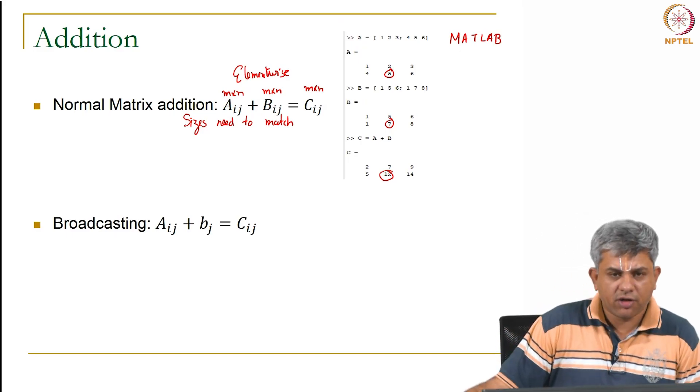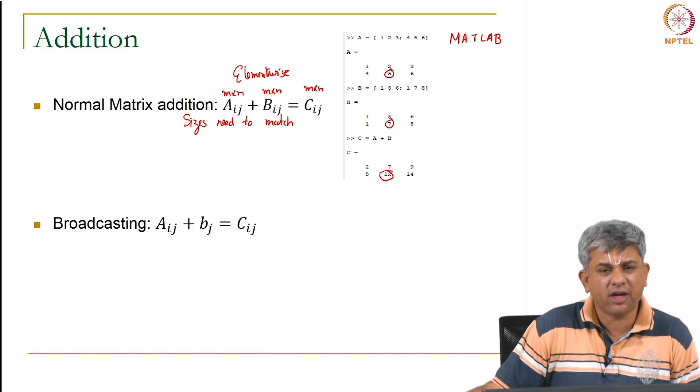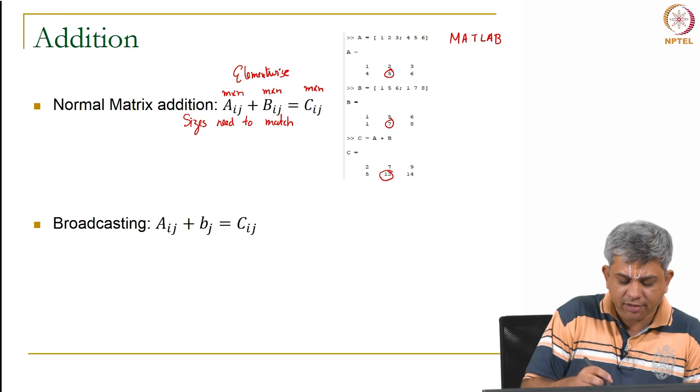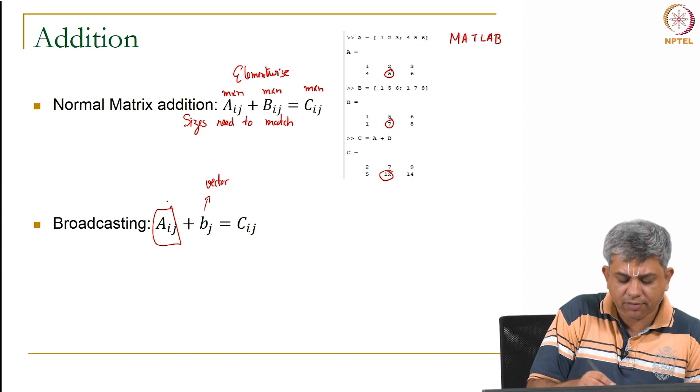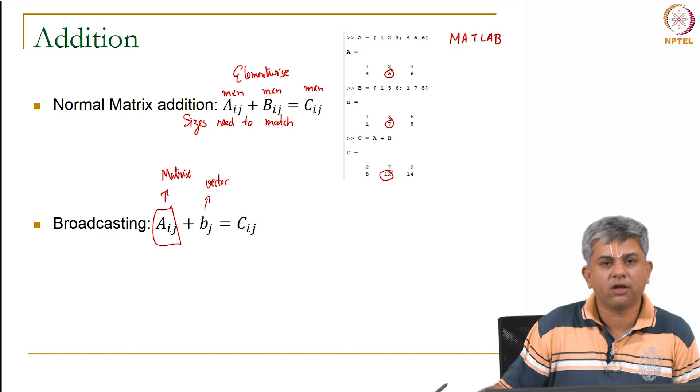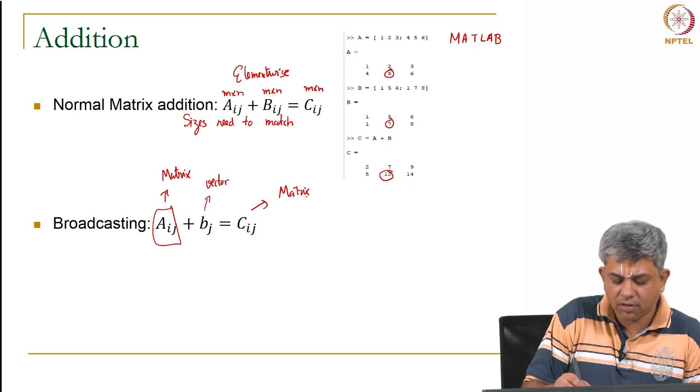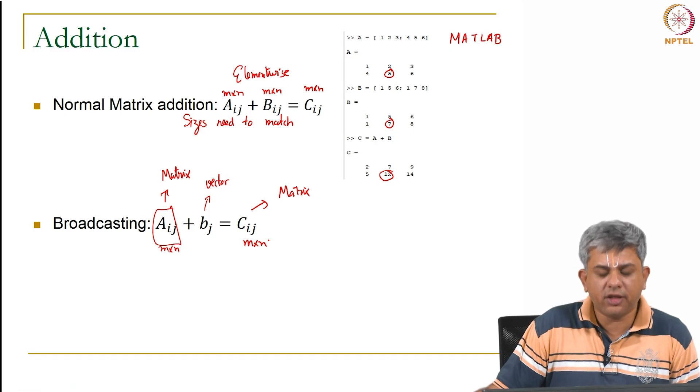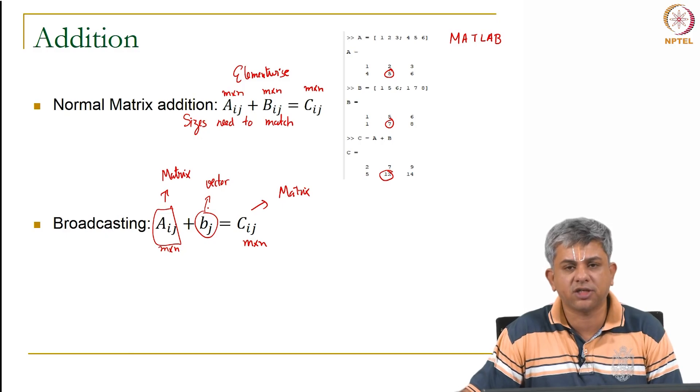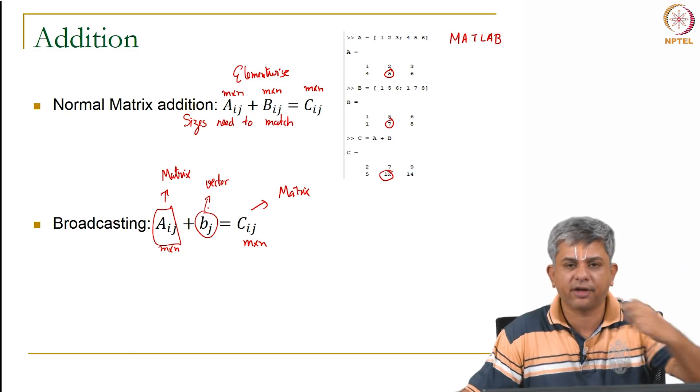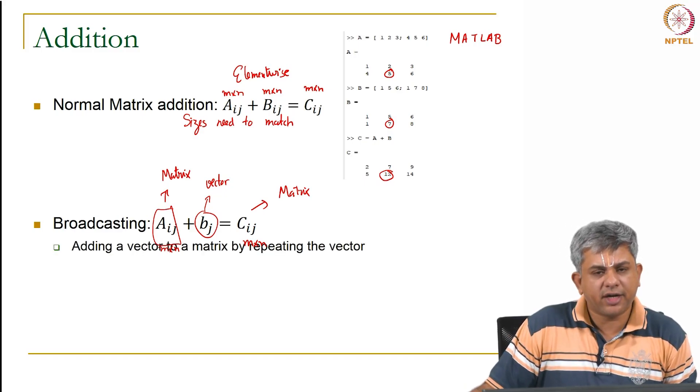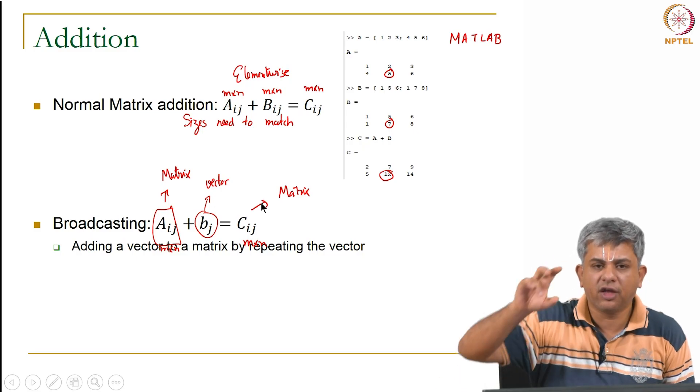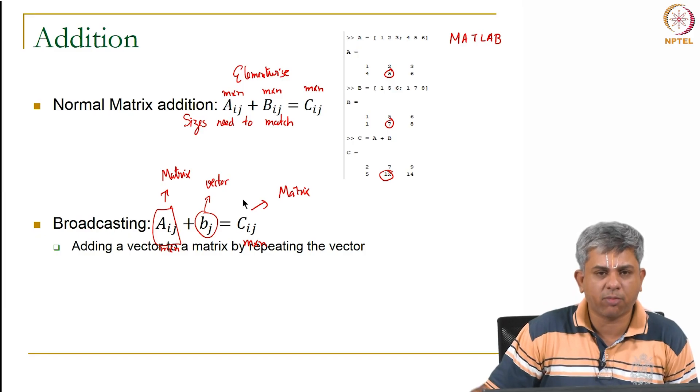Now a special type of addition which we will be using within machine learning, this is usually a programmatic thing rather than really mathematical but in a program we often add a matrix, this is actually just a vector, and this gives back a matrix. So let us say you have an m cross n matrix and C also has to be m cross n. What you do in this case is, in case either the number of rows or the number of columns of B matches, you tend to make multiple copies of the same vector and add it. This is called broadcasting.